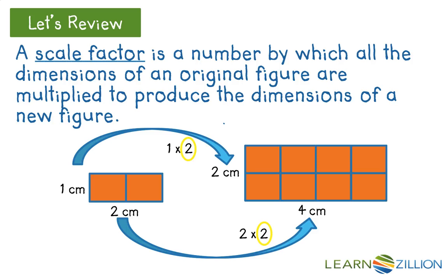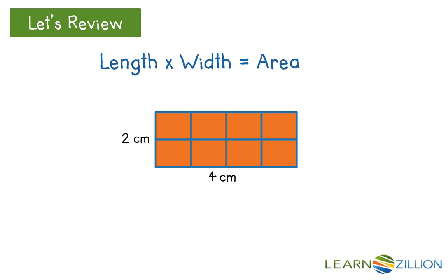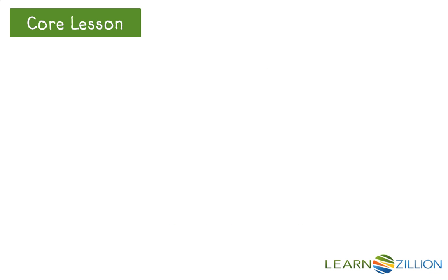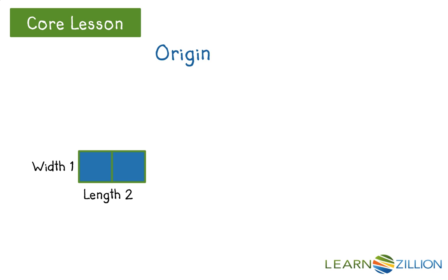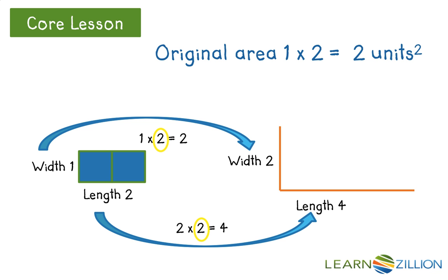Also notice how the area has changed. To find the area of a rectangle, multiply the length times the width. Now let's take a closer look at the area of a scale drawing of a rectangle. The original drawing has dimensions of 1 unit by 1 unit for length and width. When we multiply by a scale factor of 2, the scaled drawing has dimensions of 2 and 4 units.